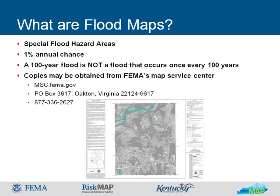To prepare maps, FEMA and its cooperating technical partners — in Kentucky, the Kentucky Division of Water — conduct engineering studies referred to as flood insurance studies, or FISs. Using the information from the FIS, engineers and cartographers delineate special flood hazard areas on flood maps. These areas are subject to inundation by a flood that has a 1% or greater chance of being equaled or exceeded in any given year.